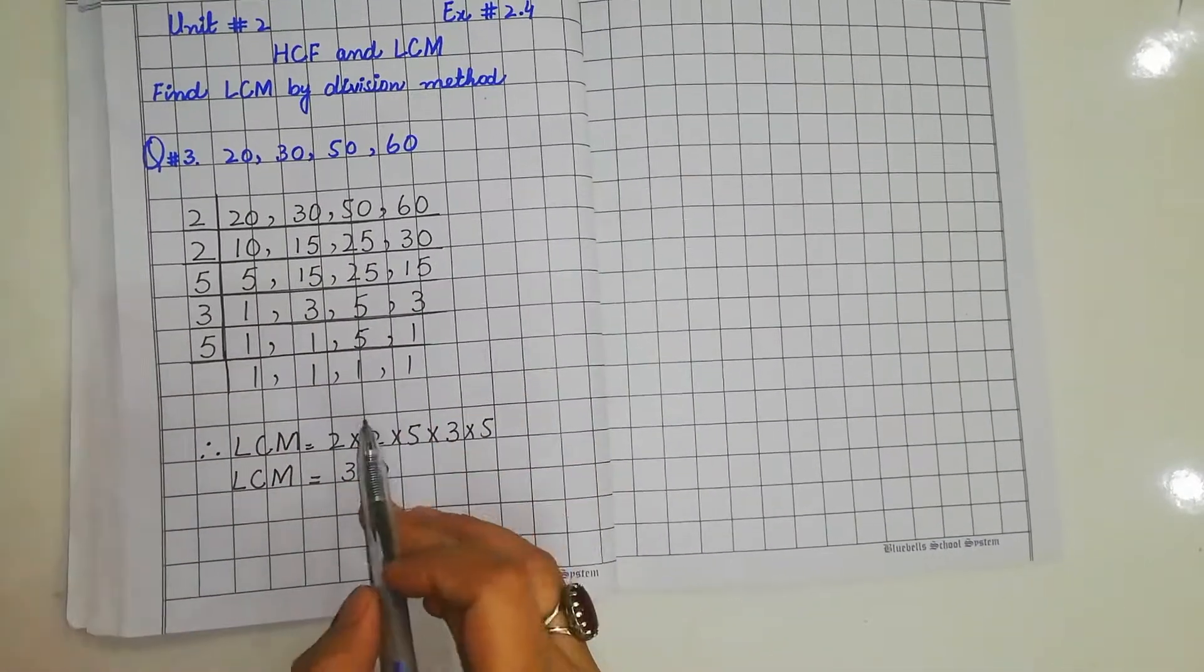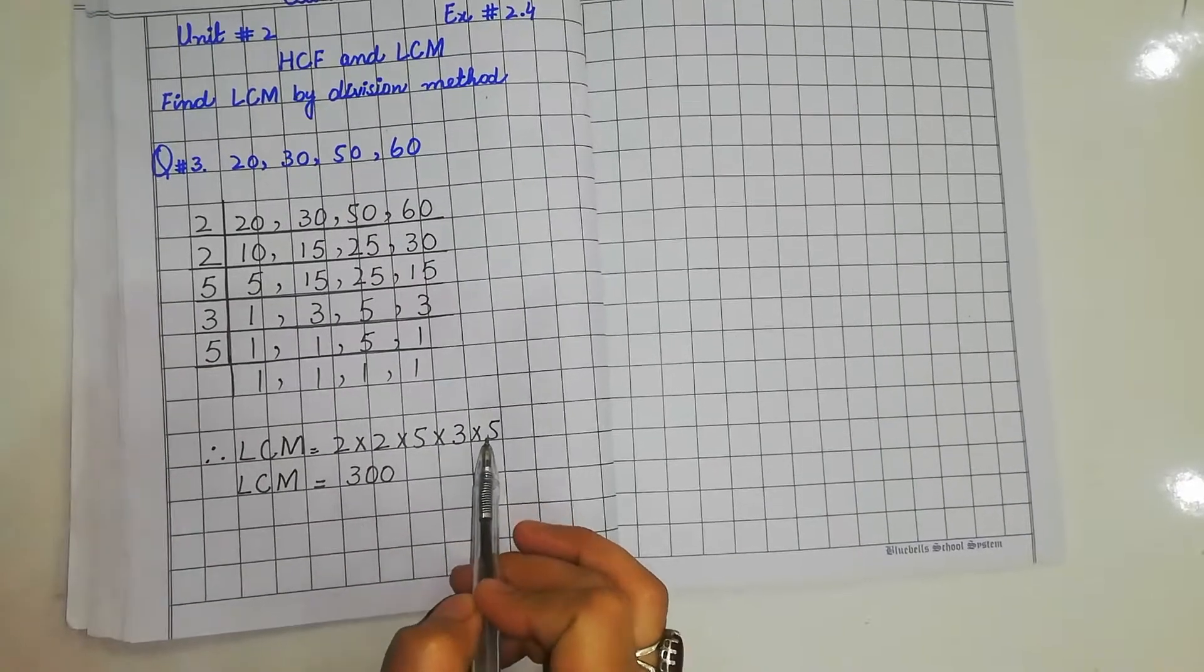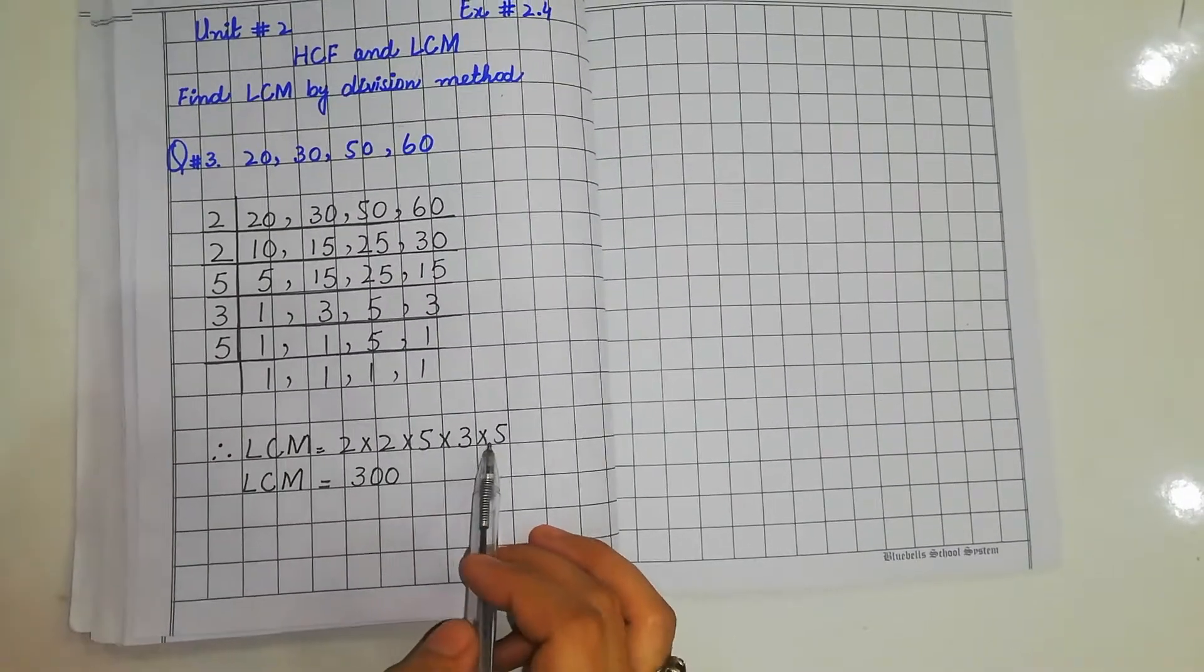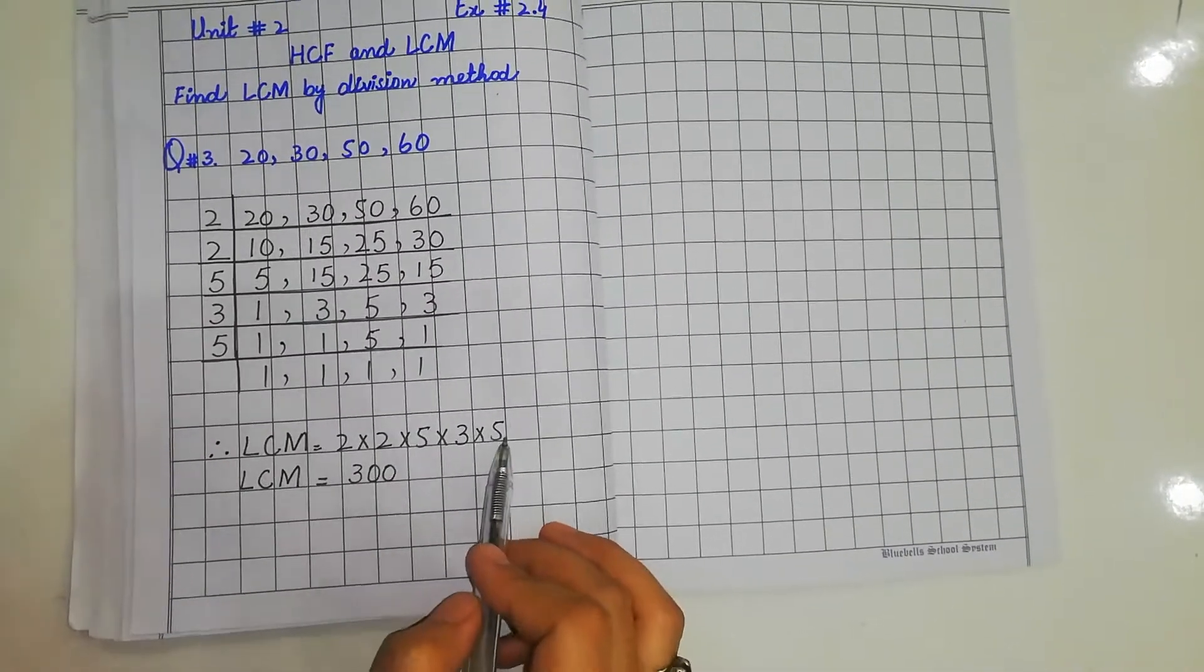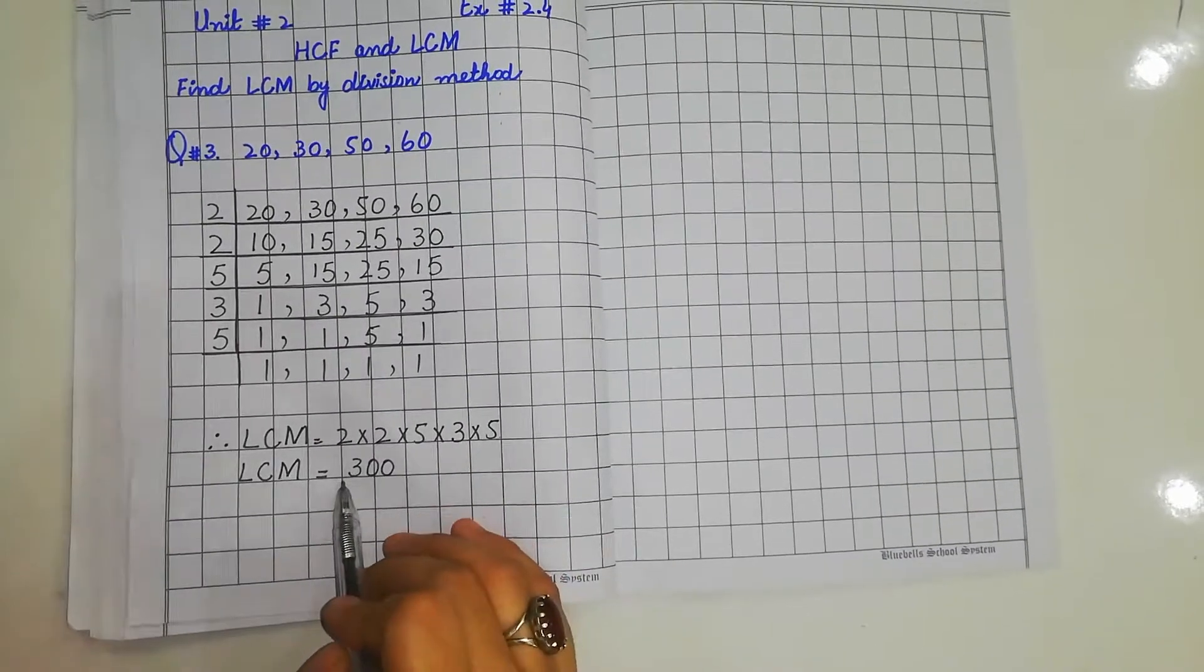After that, I will write all these prime factors here. I have written all these prime factors and then multiplied them. So my answer is 300.